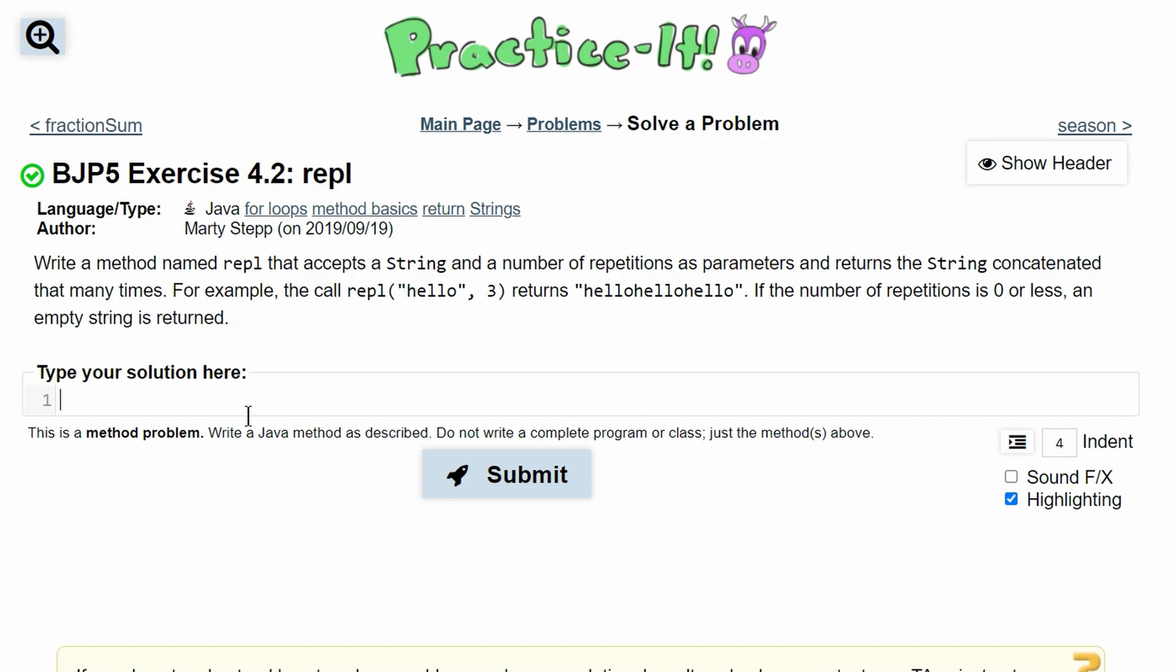So to start this off, we're going to do our method. It's going to be public static string, since it says right here we are returning a string. And then we have our name, which is Ripple,